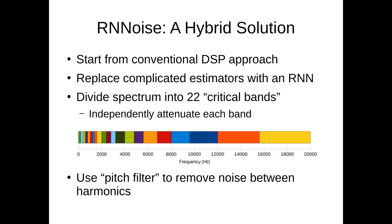RNNoise is really a hybrid solution. It starts from a conventional DSP approach, and from there it replaces these complicated estimators with a deep neural network that includes several fully connected layers as well as three GRU layers. One of the key tricks to help bring the complexity down is that the spectrum is divided into 22 critical bands rather than processing every single frequency bin separately.